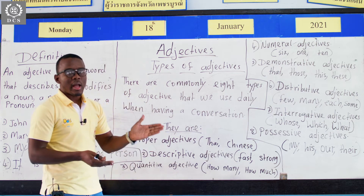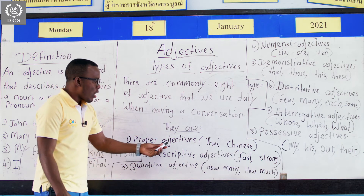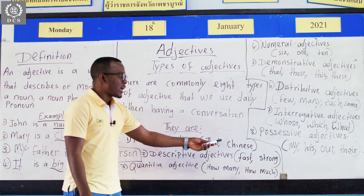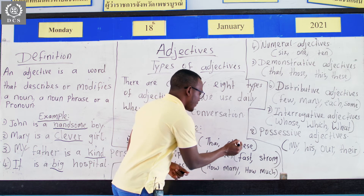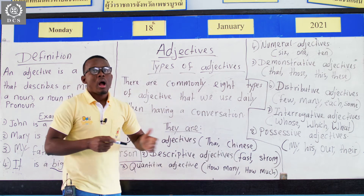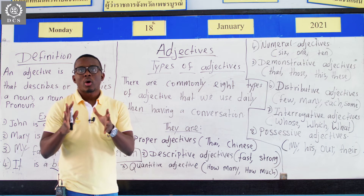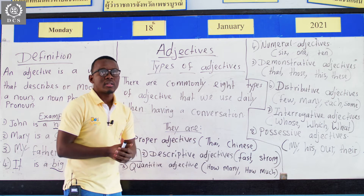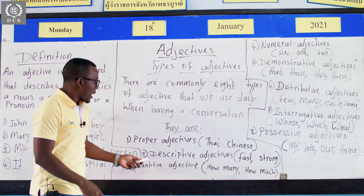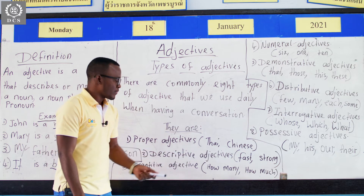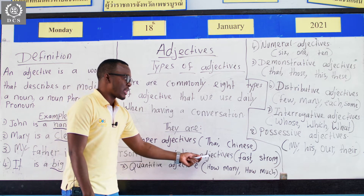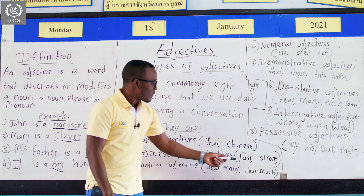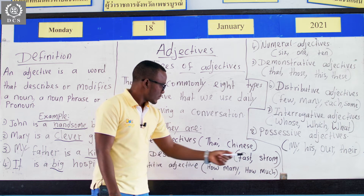The eight types of adjectives are: proper adjectives — like Thai and Chinese. These are used to describe mostly proper nouns or proper pronouns. They are very specific. We also have descriptive adjectives, which we use to describe unspecific nouns. For example: fast, strong.